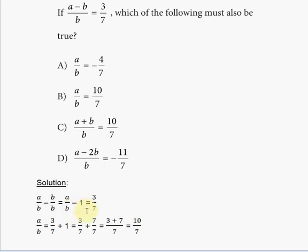So a over b is going to be three sevenths plus one. And one, using the least common denominator for this, will be seven over seven. So seven is the least common denominator for one and seven.